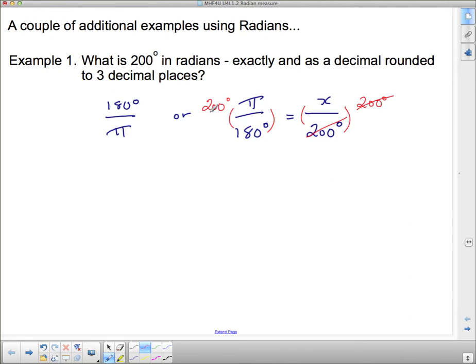200 and 180, this could actually be written as 200 over 180 times pi, if you really wanted to. And then just reduce this fraction to lowest terms. Now, generally, I wouldn't do that. I would reduce it to lowest terms here, and I would start by saying, well, 10 goes into both of these, so I'm going to knock off the zeros.